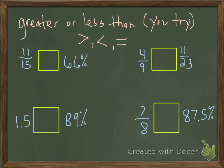Okay, so for the first one, if you were to convert this to a decimal and 9%, you would have got 73.3%. Then it's easy to compare it with the other percentage, 66% is less than. So therefore, 11 fifteenths is greater than.